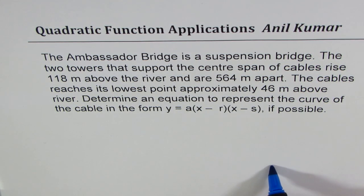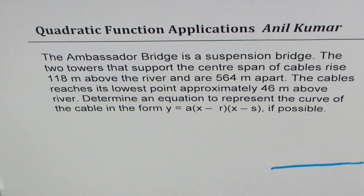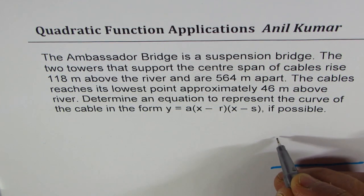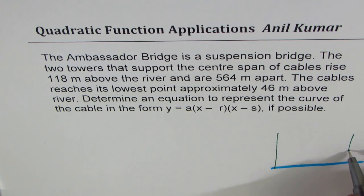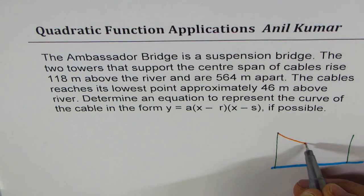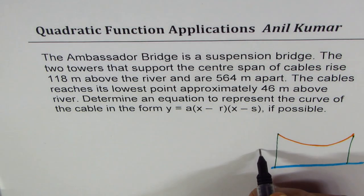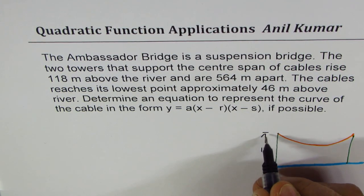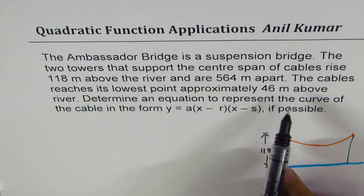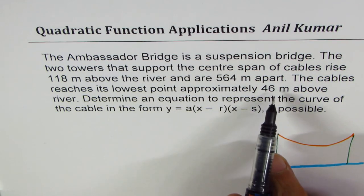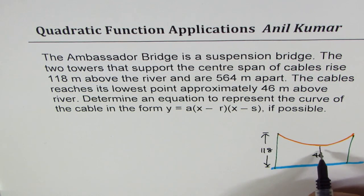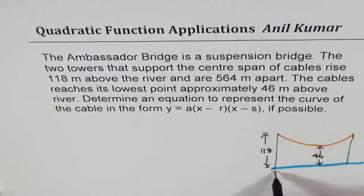Let's first sketch what information is given to us. Most of the information is pertaining to height above the river, so let this blue line be the river itself. We have two towers which are 118 meters high — these are the two towers from where the cable is suspended. The cable reaches its lowest point approximately 46 meters above the river, and the span is 564 meters. All units are in meters.